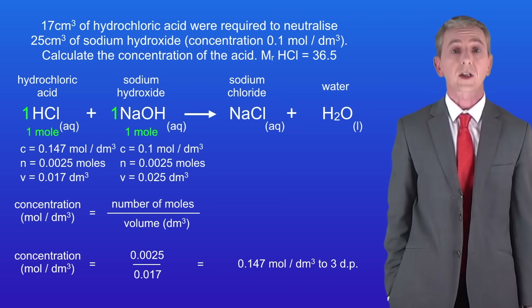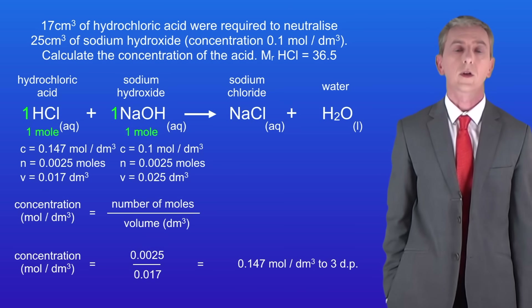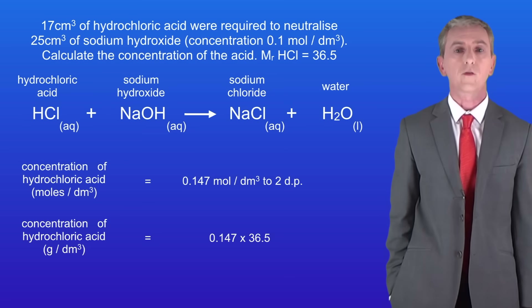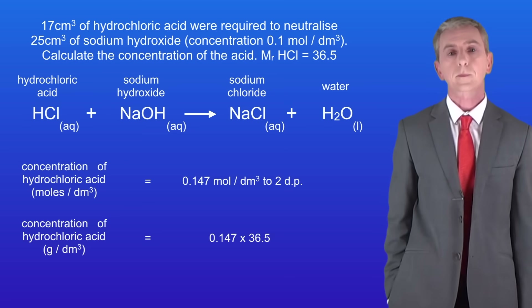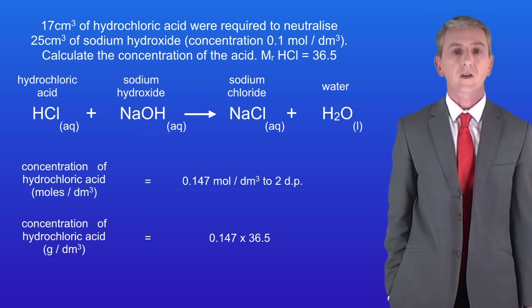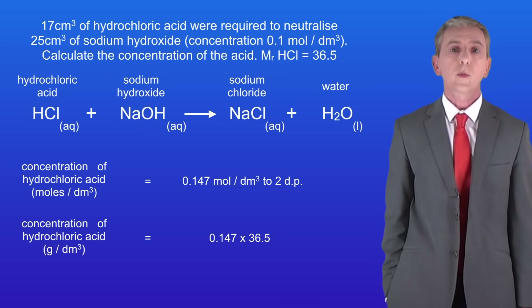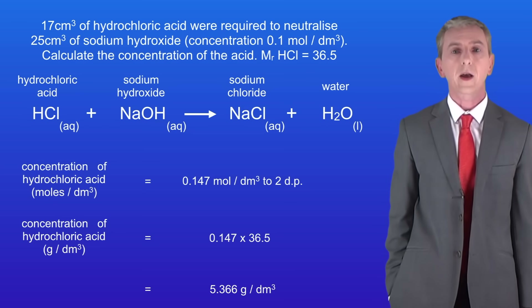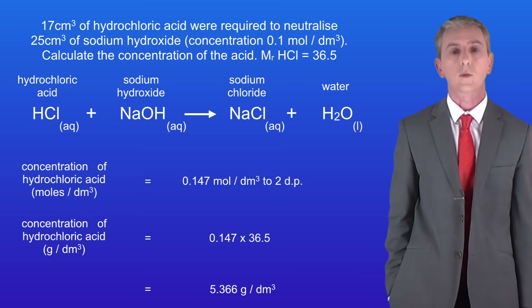In the exam you could be asked to calculate the concentration in grams per decimetre cubed. To do this we multiply the concentration in moles per decimetre cubed by the relative formula mass. The relative formula mass of hydrochloric acid is 36.5. Multiplying 0.147 by 36.5 gives us a concentration of 5.366 grams per decimetre cubed.